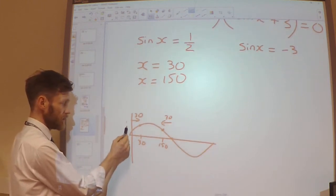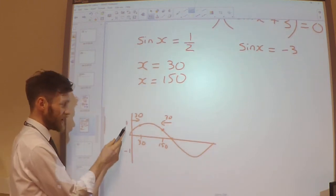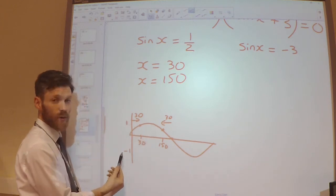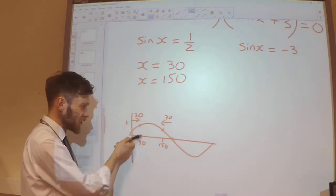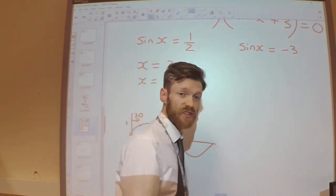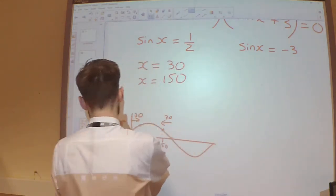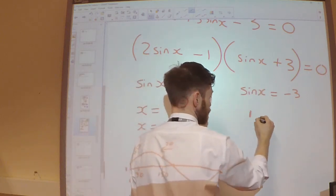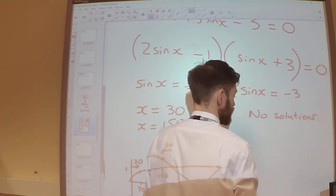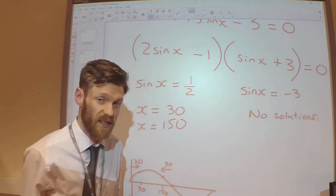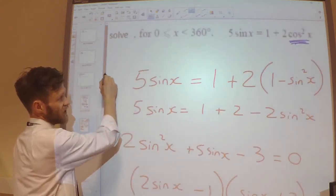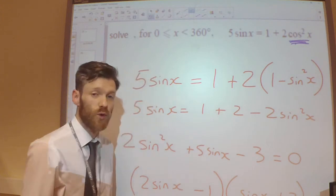We know that sine, the biggest it can be is 1, the smallest it can be is minus 1. And so the sine function is only ever between 1 and minus 1. It can't ever equal minus 3. So there will be no solutions from this bracket. So that's fine. I don't need to write any solutions there. So my two solutions to this trigonometric equation are 30 and 150.